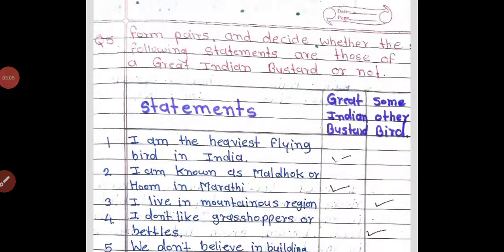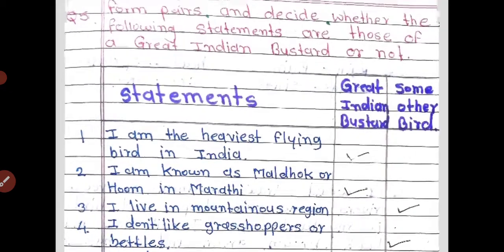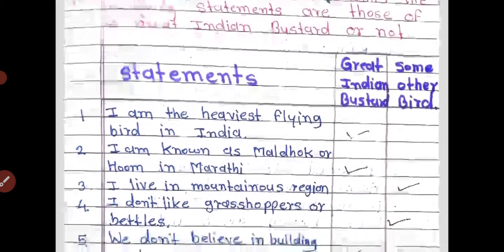This is an important question from 'Pairs' — decide whether the following statements are those of the Great Indian Bustard or not. I have made one column for 'statement,' one for 'Great Indian Bustard,' and one for 'some other bird.' The first statement is: 'I am the heaviest flying bird in India' — this is the Great Indian Bustard, so I have ticked it.